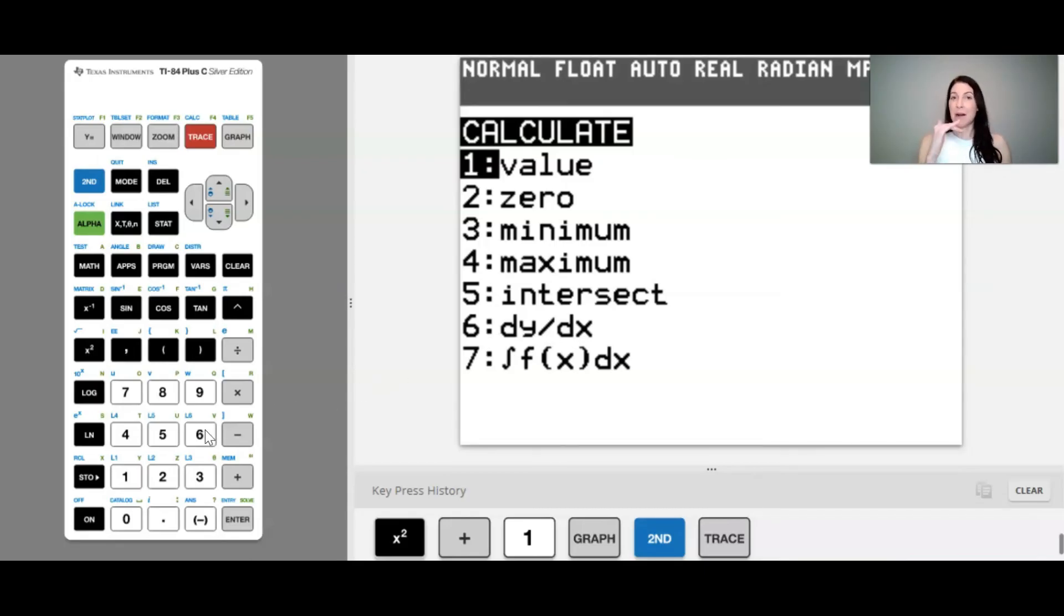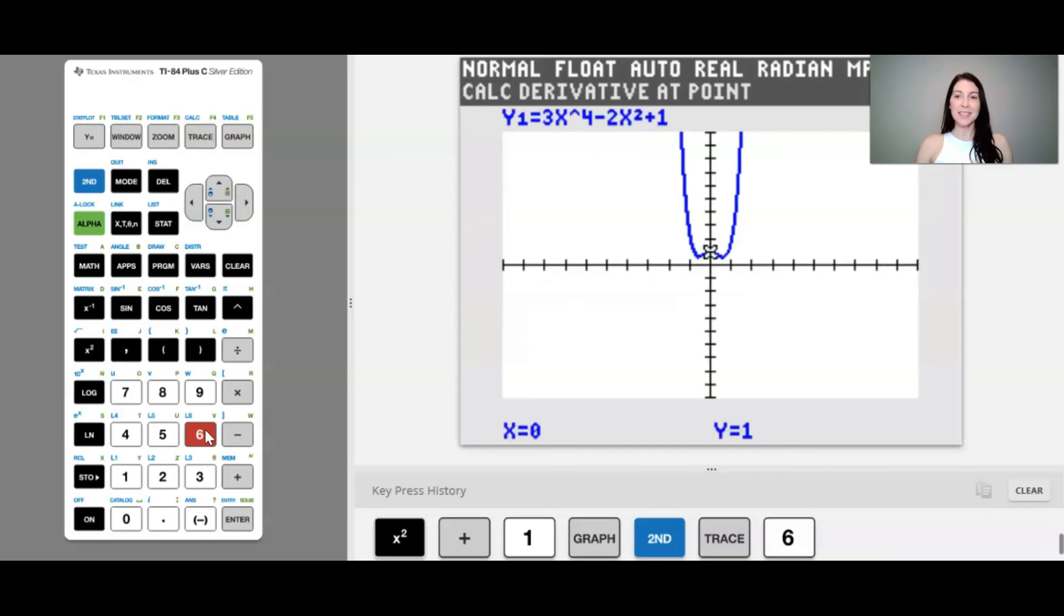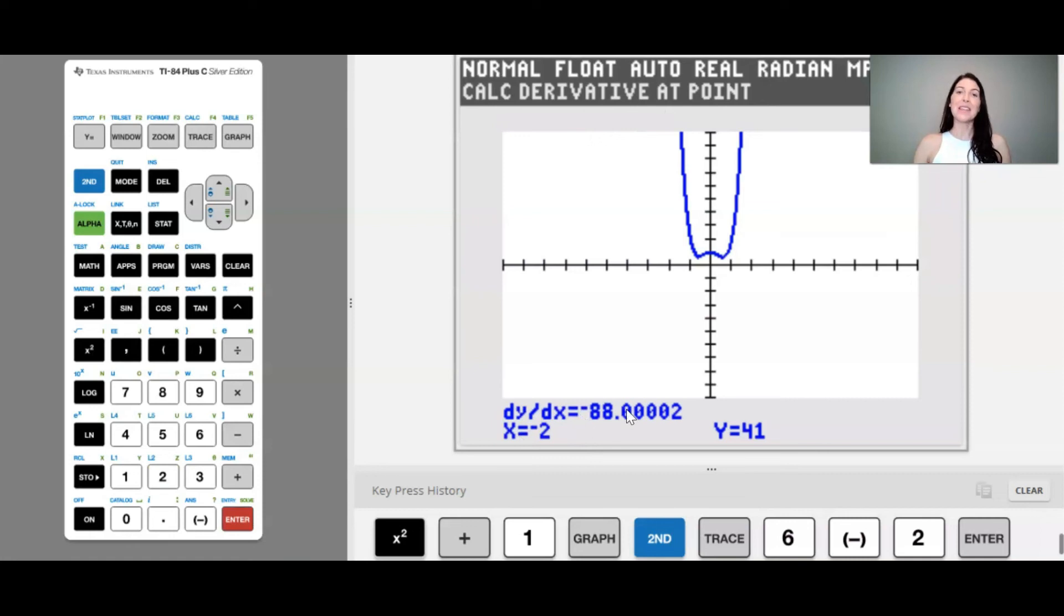So you can either go down to option 6 or just press 6. And then you simply just start typing the number you want to find the derivative at. So I want to find the derivative at negative 2. And you'll see this box pop up down here where you can type in the x value. And press enter. And there it is. Once again, it's giving you the derivative of this function evaluated at negative 2. And again, the exact value is negative 88.